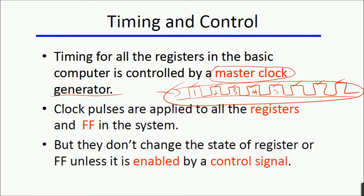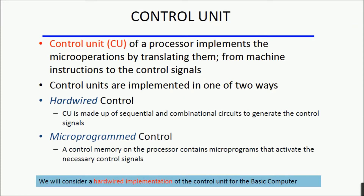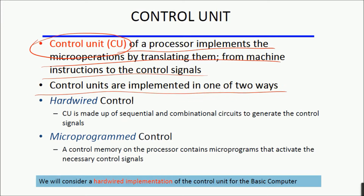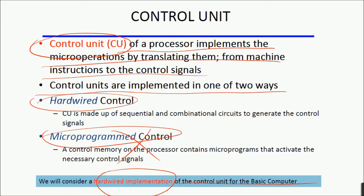What we need to do is translate these pulses into physically identifiable separate signals. For example, the micro operation we want to execute when the first clock pulse arrives should be translated into a separate signal, and then the second clock pulse has to be translated into another physical separate signal — and our control unit does that for us. The control unit of a processor implements micro operations by translating them from machine instructions to control signals. Control units are implemented in one of two ways: hardwired control or micro-program control. Here we are only talking about the hardwired implementation for the basic computer, as it is a very small computer and hardware implementation is very feasible.